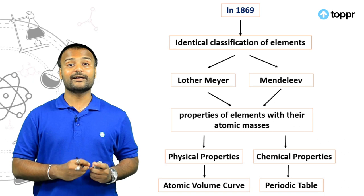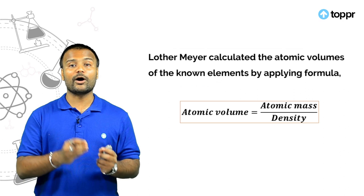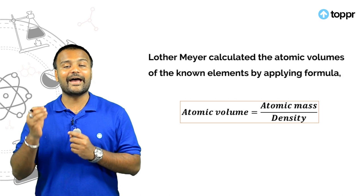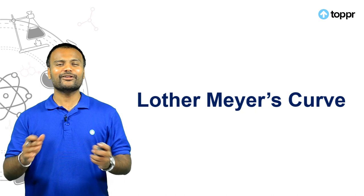In this video, I am going to emphasize Lother-Meyer's curve. So what is this Lother-Meyer curve? Lother-Meyer calculated the atomic volumes of all elements using this formula: atomic volume equals atomic mass divided by density. He then plotted a graph called Lother-Meyer's curve.